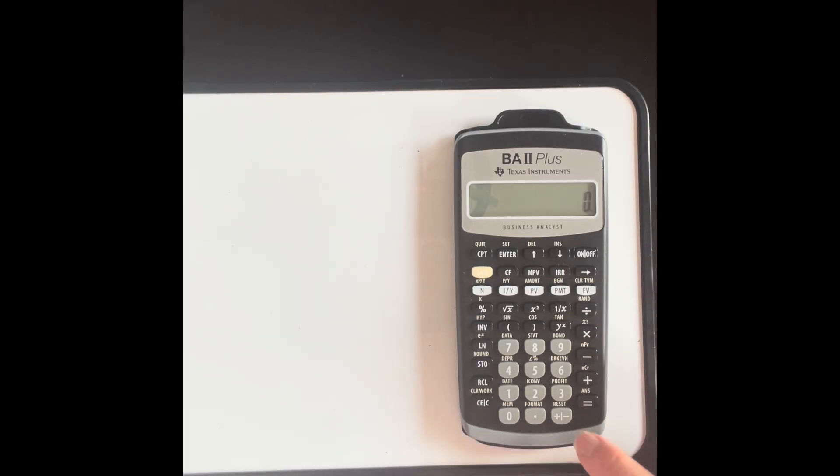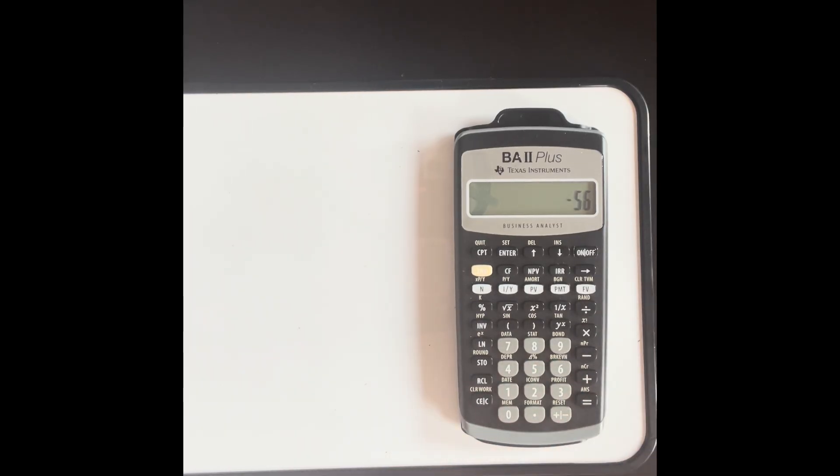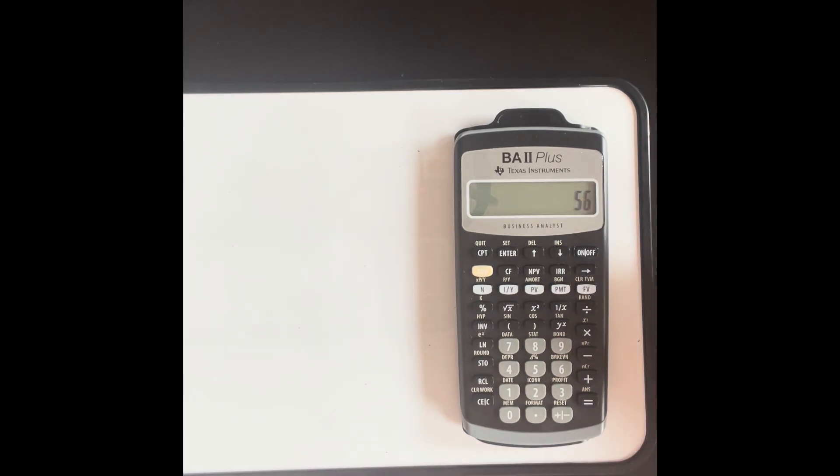Let's take a look at the negative, change sign key. So this allows you to change a positive to a negative, a negative to a positive, and the way you use it is after you've entered the number. So if I have 56, and I want to make it negative, I'll type it in afterwards. And then I can carry on and do whatever my calculations are. If I press it again, it changes a negative to a positive. Press it again, it changes a positive to a negative.